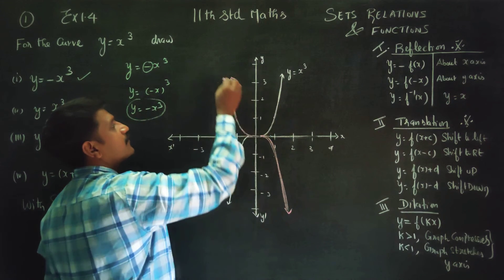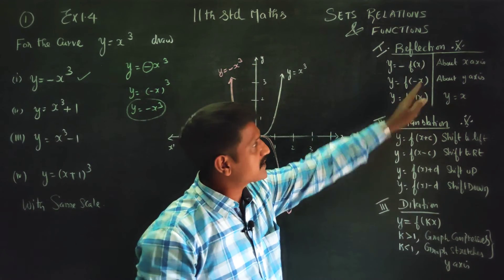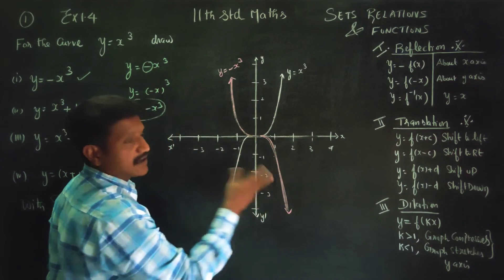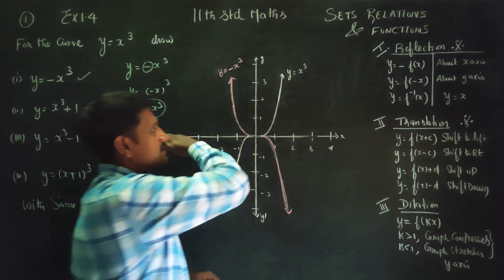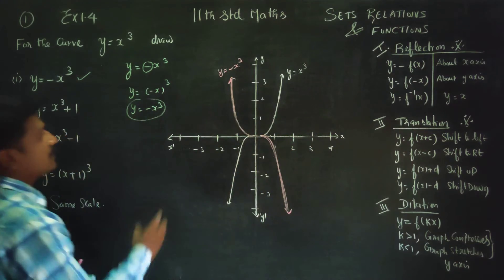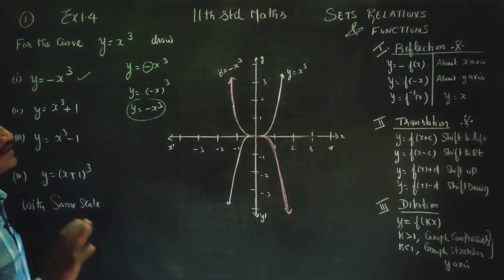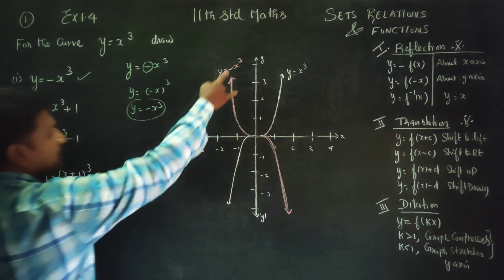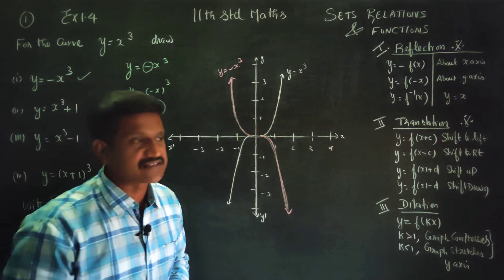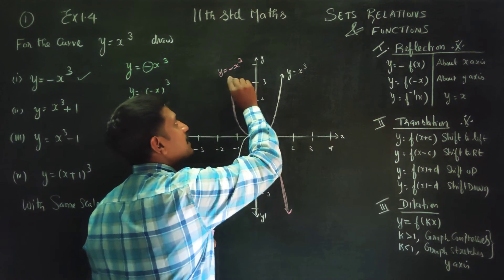So this is the formula y = -x³. If y = f(x) becomes -f(x), it is called reflection about the x-axis. In the exercise, you must know what is reflection, what is translation, and what is dilation. If you know these, it is a very beautiful exercise. In the exam, you just examine the diagram and represent y = -x³. You can use pencil and blue pen to note the graph.